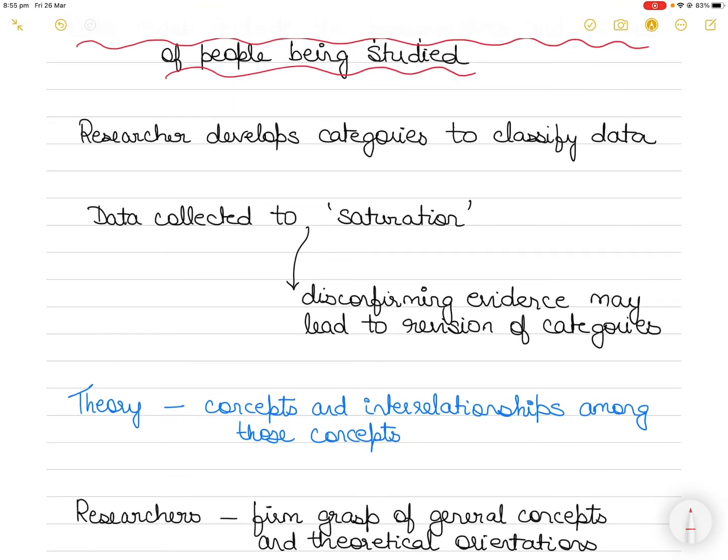More so than in any other qualitative methodology, data analysis in a grounded theory study begins almost immediately at which point the researcher then develops categories to classify the data. That's because there is great volume of data and that needs to be classified immediately so that you can segregate the data under the classifications.